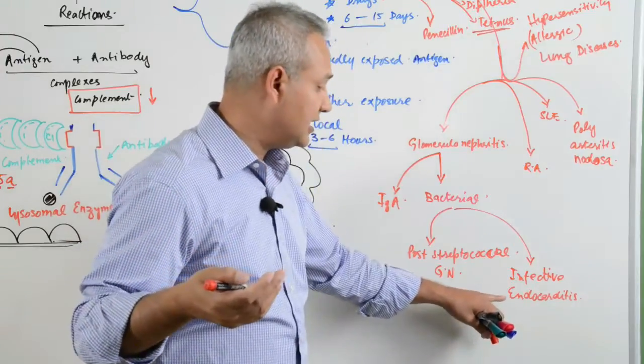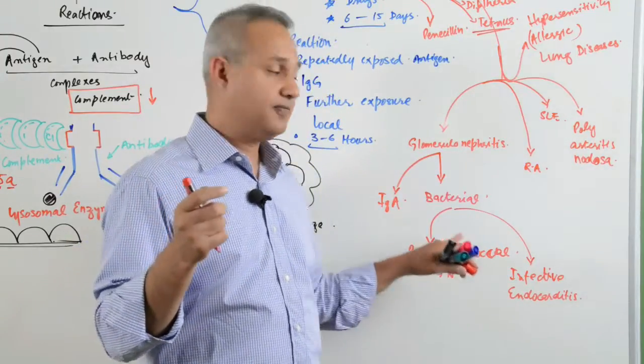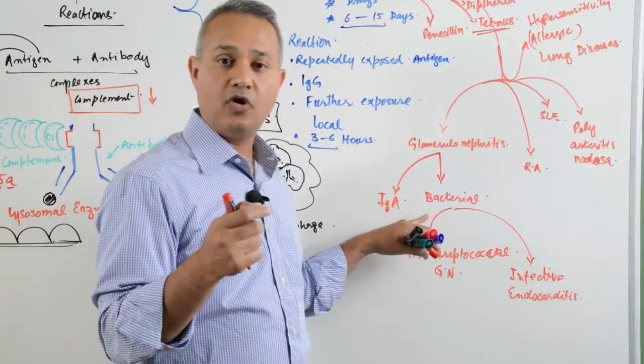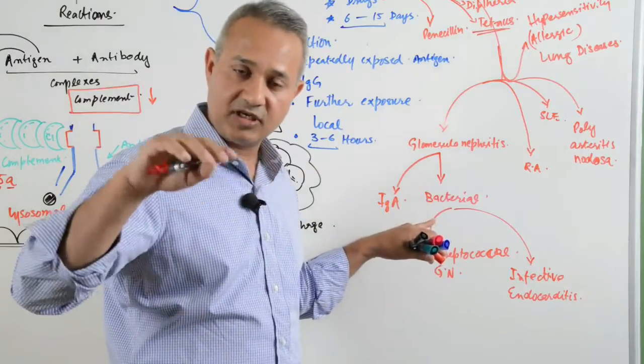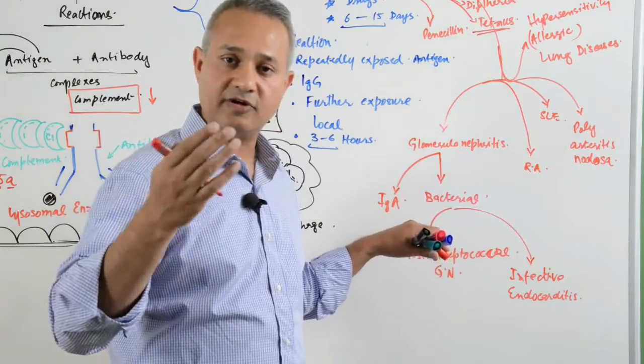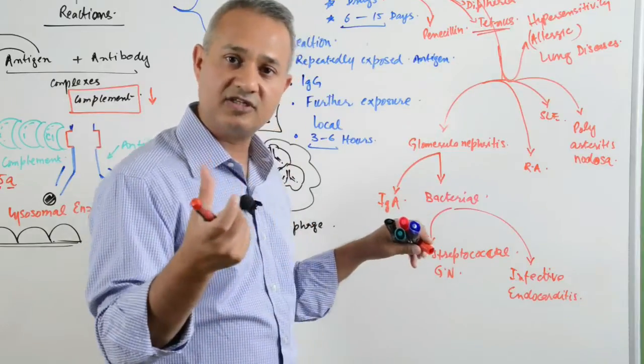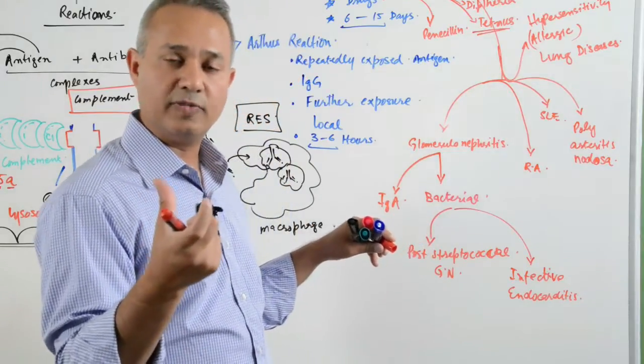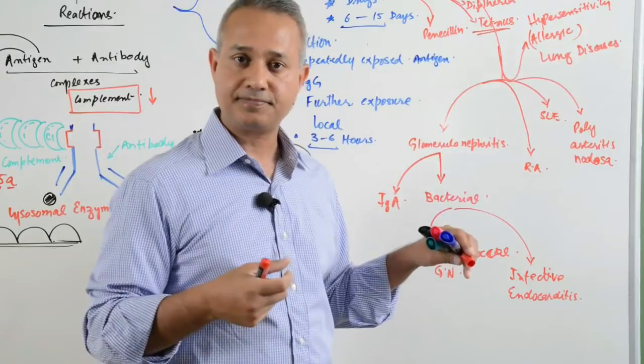Now interestingly, in infective endocarditis, the renal system and kidney basement membranes also develop glomerulonephritis. Crescentic glomerulonephritis is seen there.